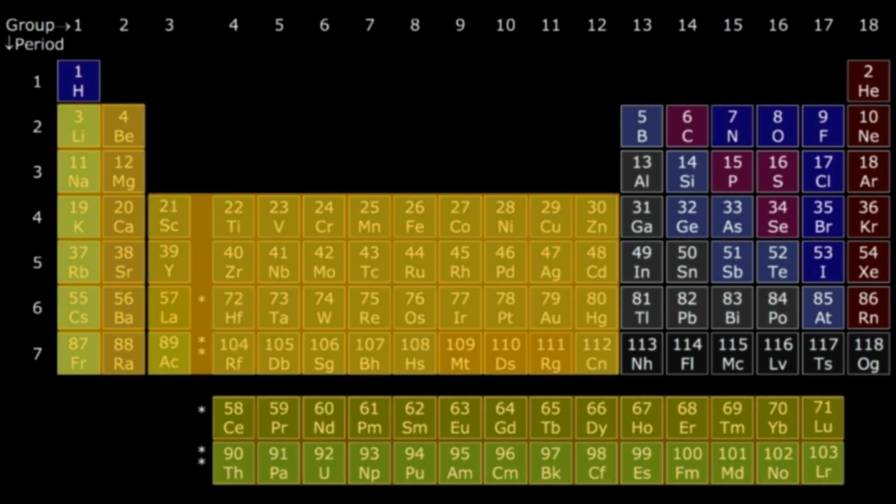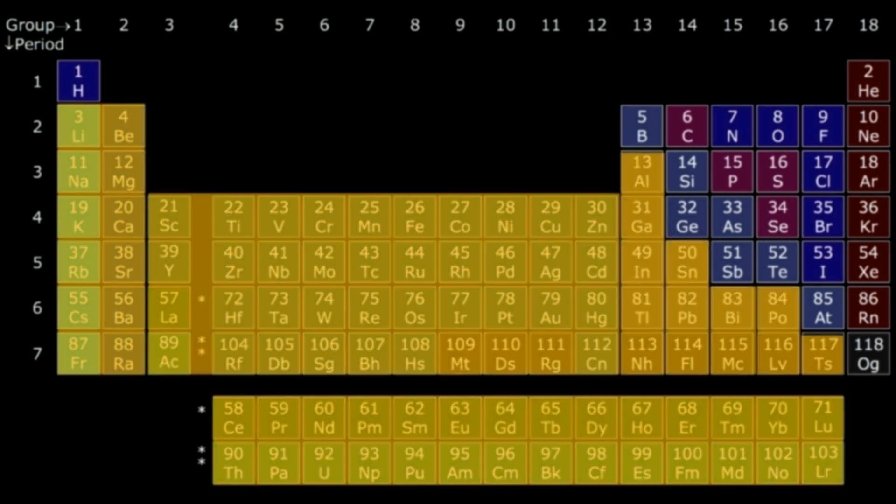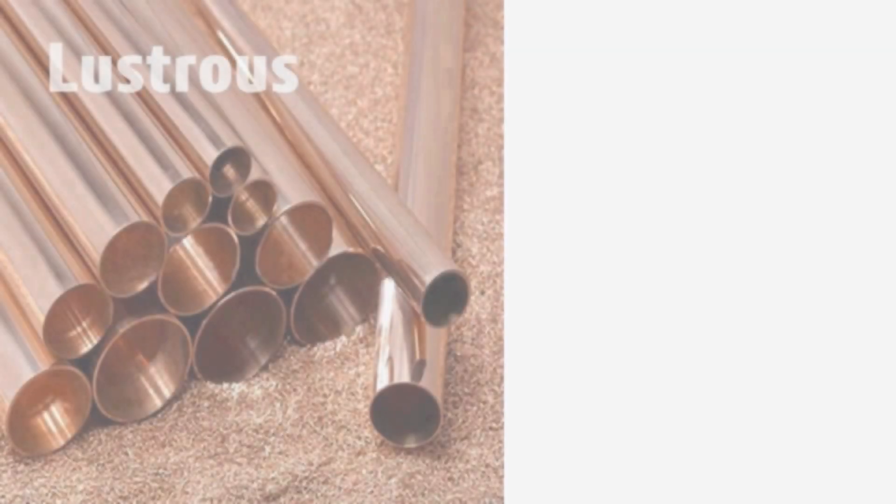All the S, D, F block elements and half of the P block elements are metal. Metals are generally very good conductors of electricity and heat. They are mostly hard solids with high melting and boiling points because metals are consisting of metallic lattice with high lattice energy. Metallic luster is common in all metals.